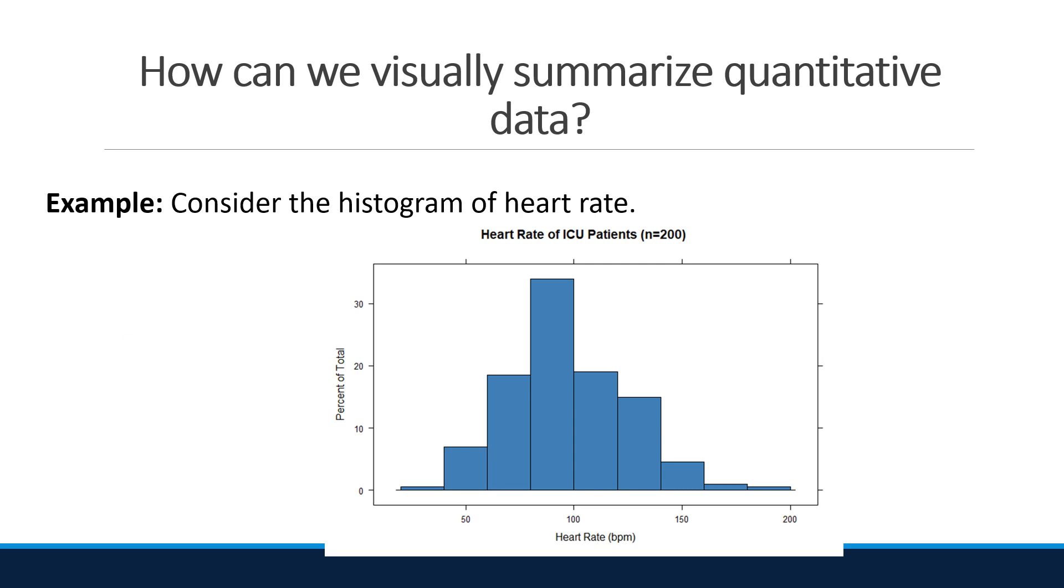Consider the histogram of heart rate. Again, we could draw a curve over the bars. Even though the bell would not be perfect, it is close. We would say this data set has a bell shape. Most of the points are in the center with fewer out at the ends or the tails. Notice that all bell-shaped distributions are unimodal.